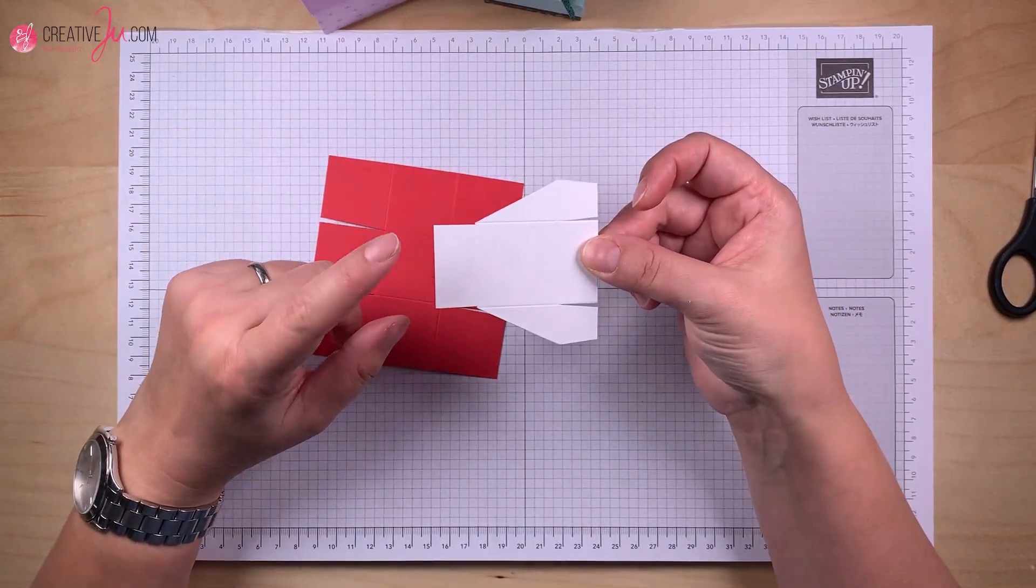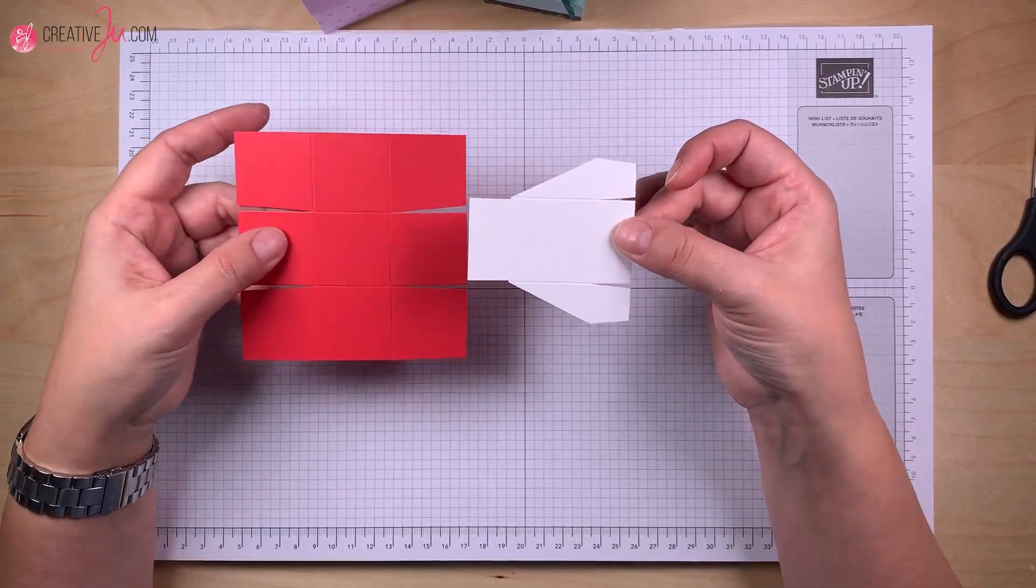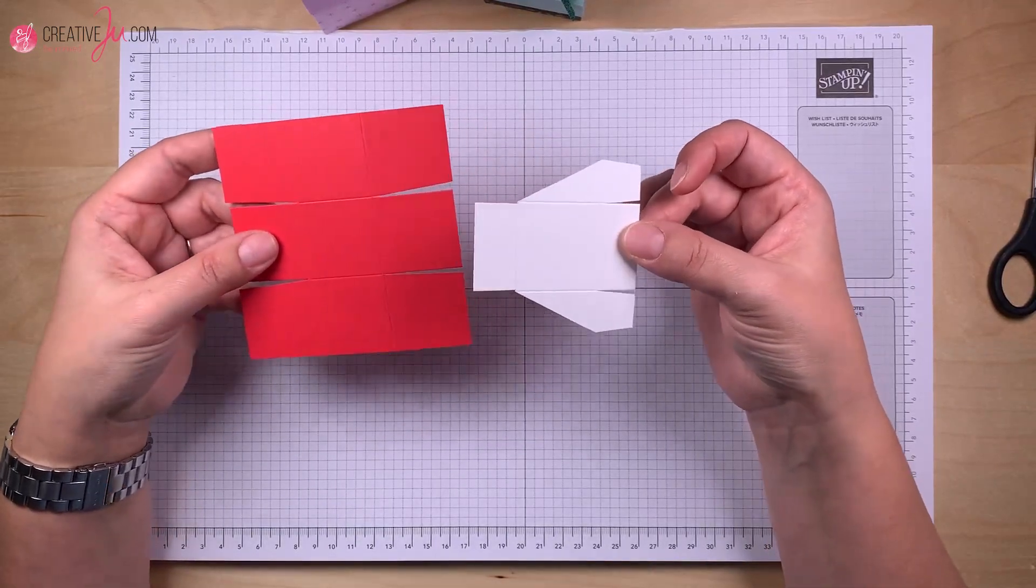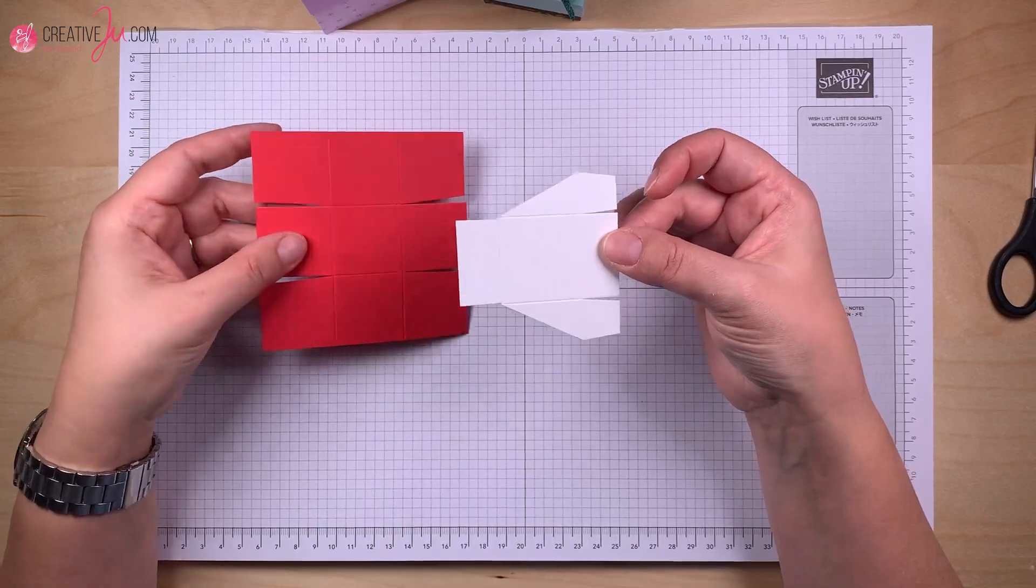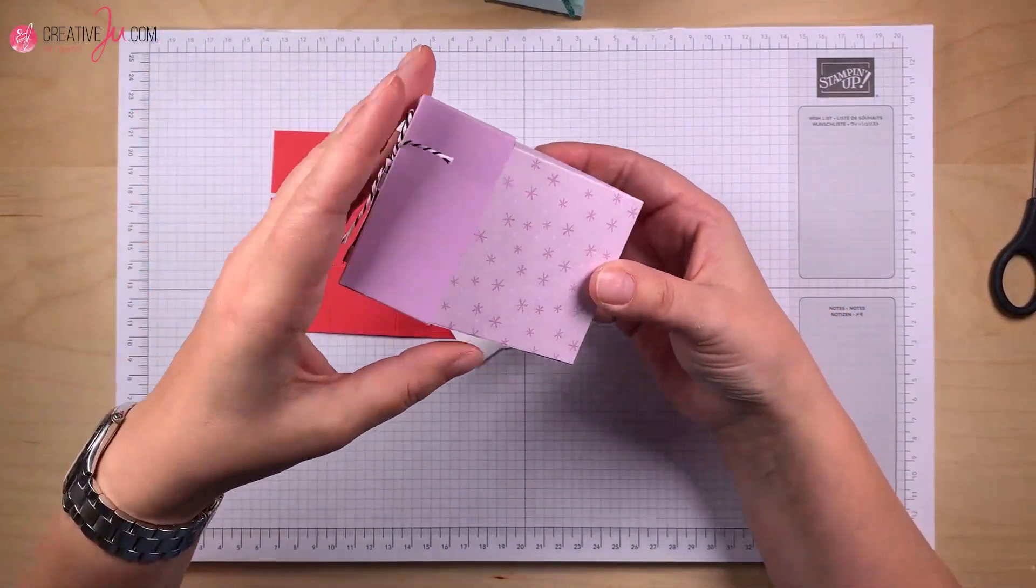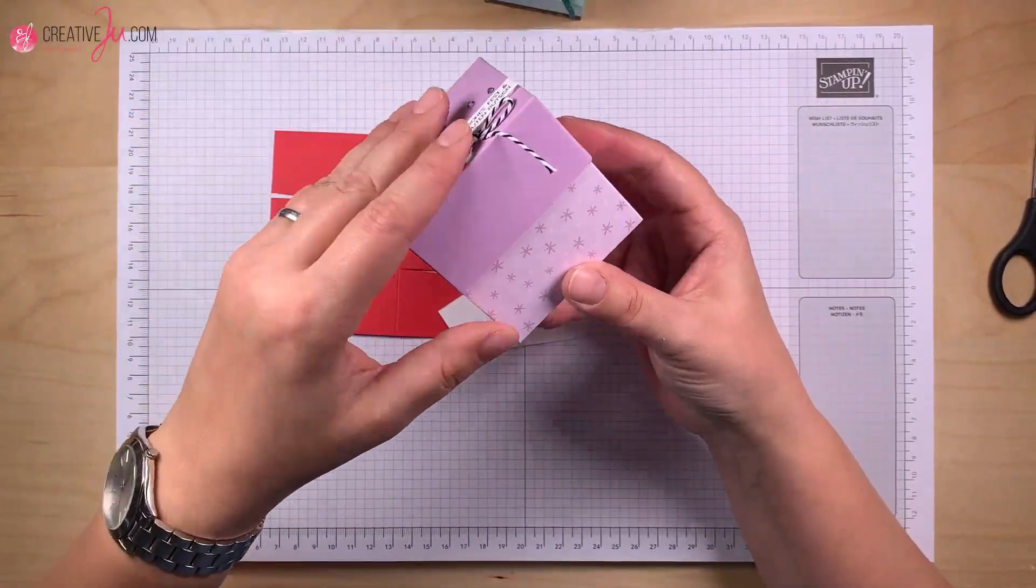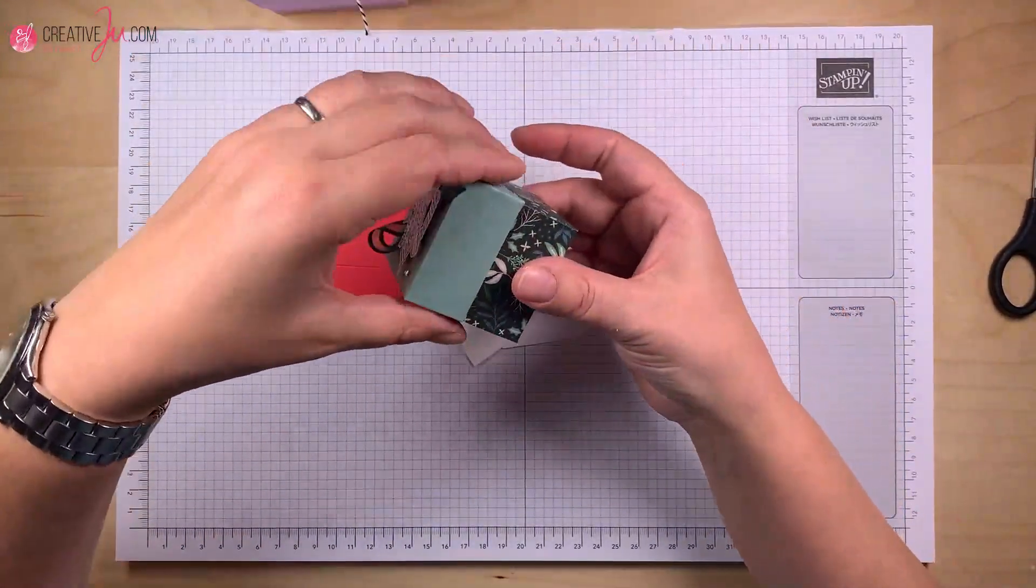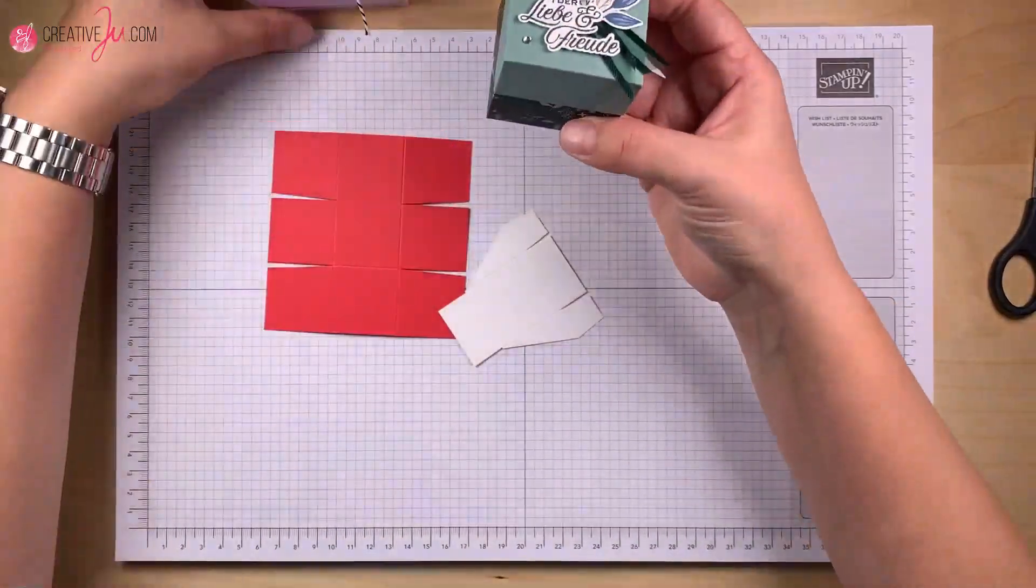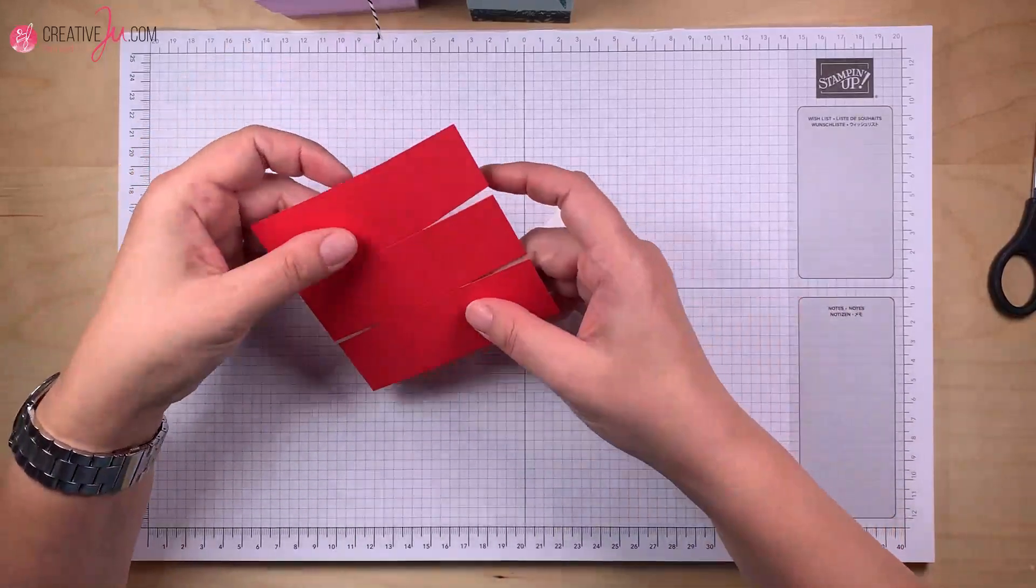Erstmal, wie man diese Klebelasche versteckt. Aber da kommt ihr wahrscheinlich schon von selber drauf. Aber auch, wie man die Box so zuklebt, dass der Deckel perfekt sitzt. Also der ist auch nicht zu lasch und nicht zu fest. Und bei diesem hier auch. Und die Box ist gerade. Und das zeige ich jetzt gleich. Deswegen unbedingt weiter gucken.